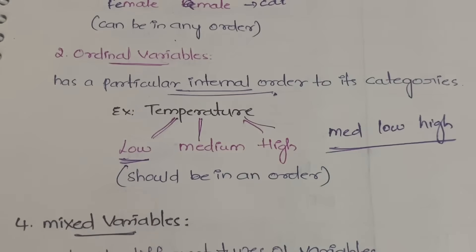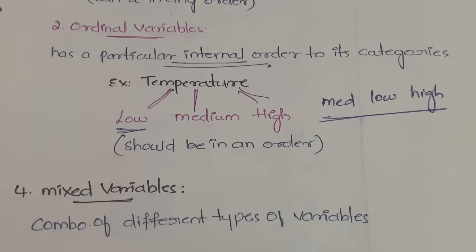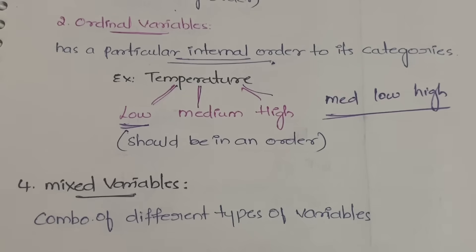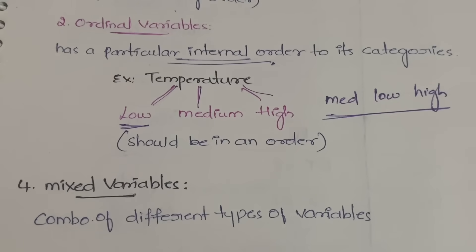Mixed variables are a combination of different types of variables. You can combine binary variables, ordinal variables, nominal variables, and interval scale variables together — that combination falls under mixed variables. This covers all the types of data used in clustering. In the next video, I'll explain each of the clustering methods. Thanks for watching!